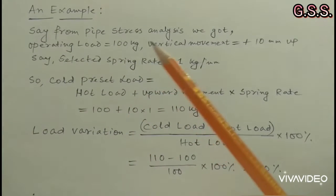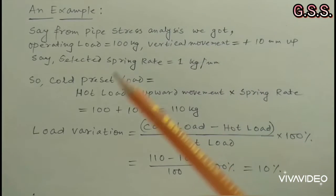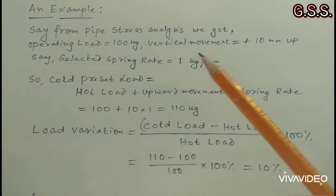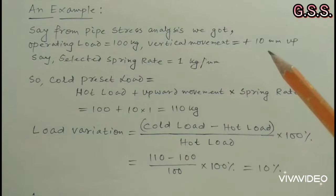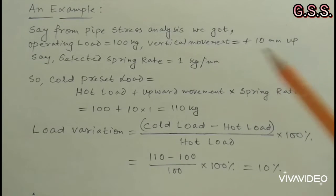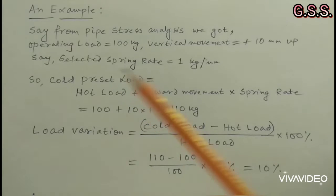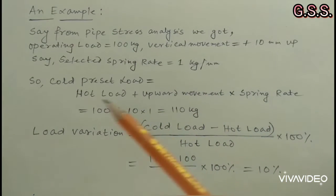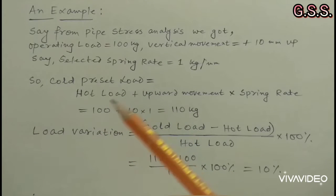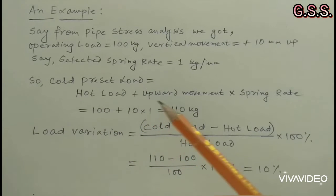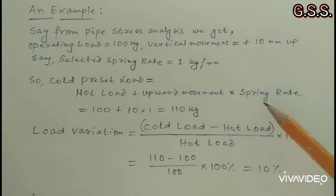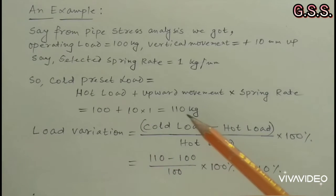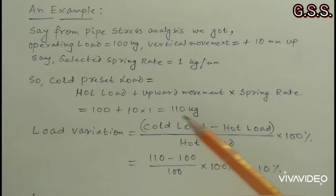From pipe stress analysis, operating load equals 100 kg and vertical movement equals plus 10 mm upward. Selected spring rate equals 1 kg per millimeter. So cold preset load equals hot load plus upward movement multiplied by spring rate equals 100 plus 10 multiplied by 1, which equals 110 kg.